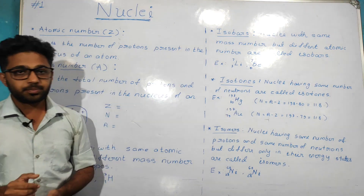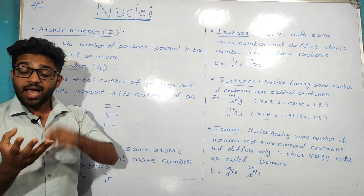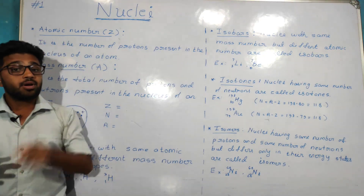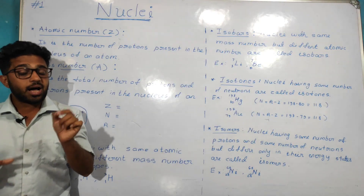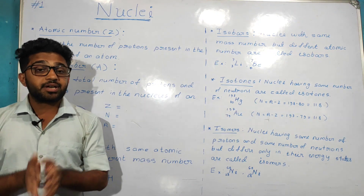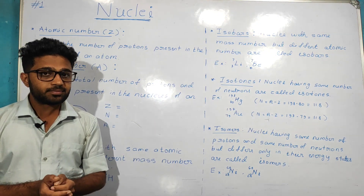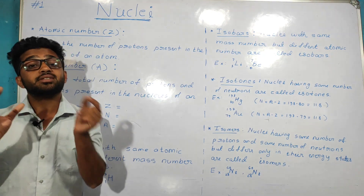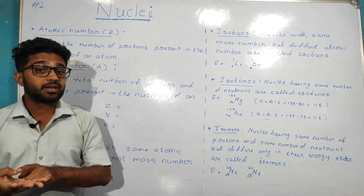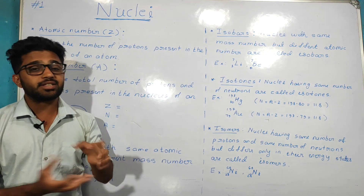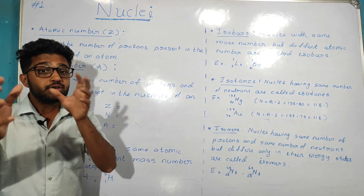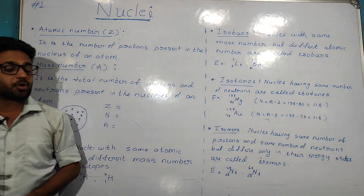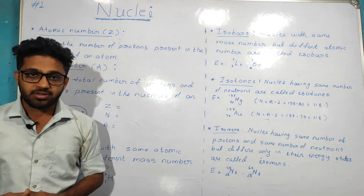Atom is made up of protons, neutrons, and electrons. Among them, protons and neutrons are situated at the center — this is called the nucleus. So the nucleus is made up of protons and neutrons.